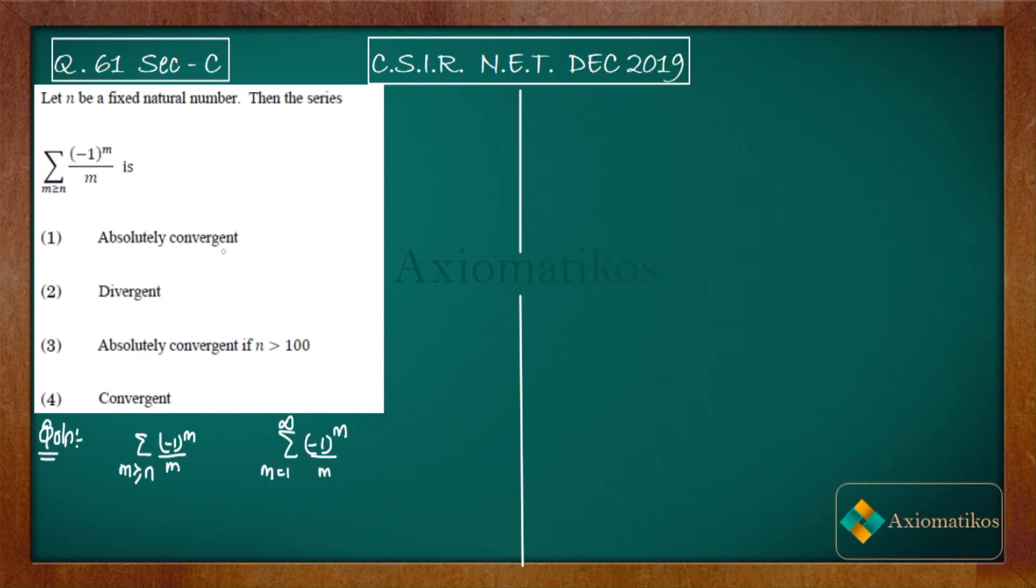Now what your question is asking: whether it is absolutely convergent or not. So what is the meaning of absolute convergence? Absolutely convergent means—I should write a note for you.